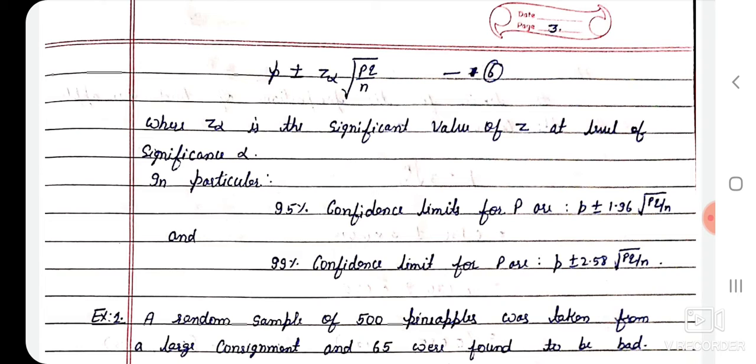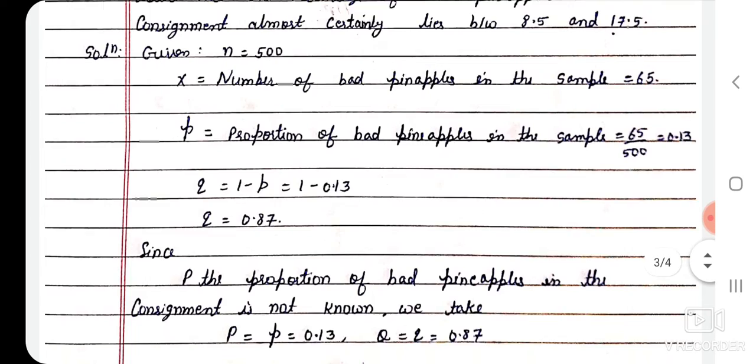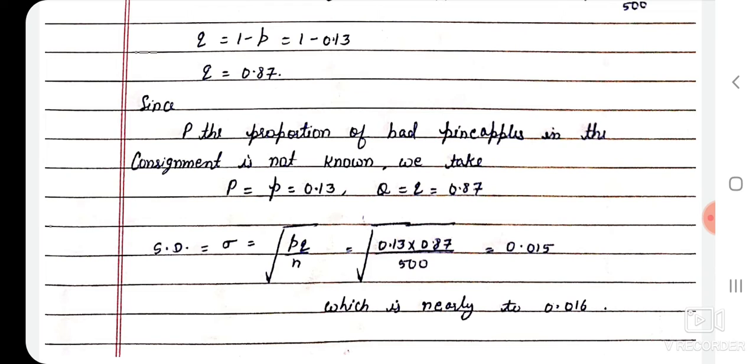A random sample of 500 pineapples was taken from a large consignment and 65 were found to be bad. So total n = 500. x = number of bad pineapples in the sample = 65. Then small p̂ = proportion of bad pineapples = x/n = 65/500 = 0.13. And small q̂ = 1 minus p̂ = 1 minus 0.13 = 0.87.